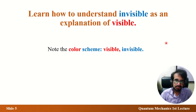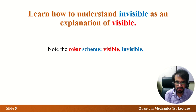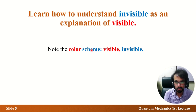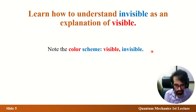I'll use a color scheme throughout: observation is colored red, and explanation — which involves invisible things like electrons that we can't see but that explain observable things — is colored blue. So blue is the invisible explanation, red is the visible observation. Pay attention to this if you can; otherwise, you can ignore the distinction and just read the text.